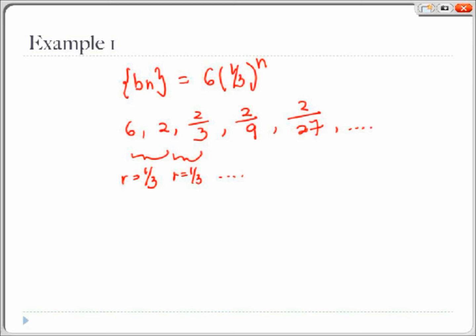To find the sum of the sequence, we can apply the formula that we introduced earlier, which is the summation from k equals 0 to n of a r to the k equals a times r to the n plus 1 minus 1 over r minus 1, where r does not equal 1.